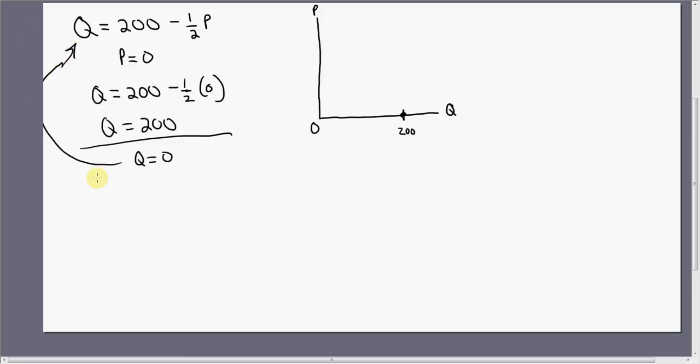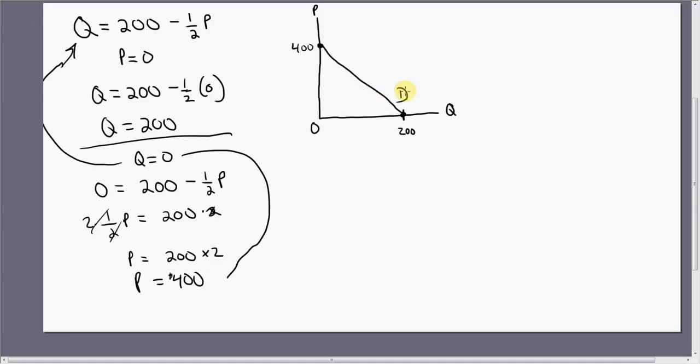Plug that into our demand equation and solve for the price. Price equals 400. In this step here, I just multiplied both sides through by 2, so that cancels and you just get 400. When Q is 0, P is 400. Here's 0 for Q, here's 400 for P. Connecting the dots, we have another demand curve.